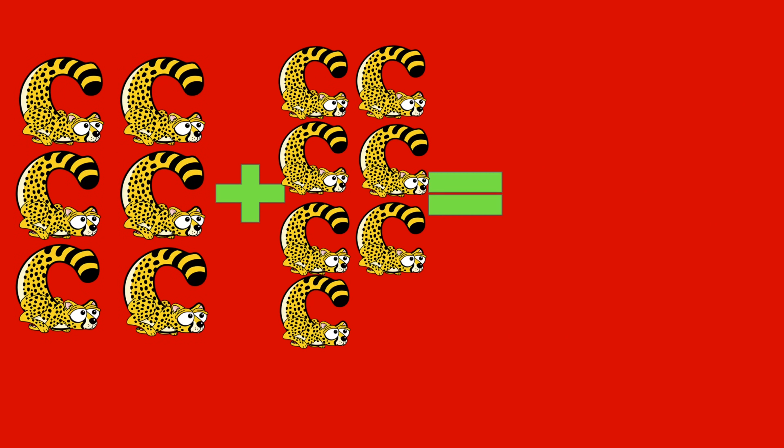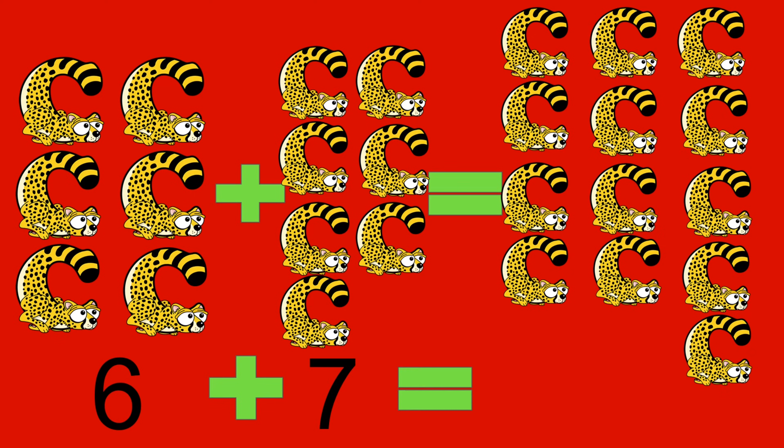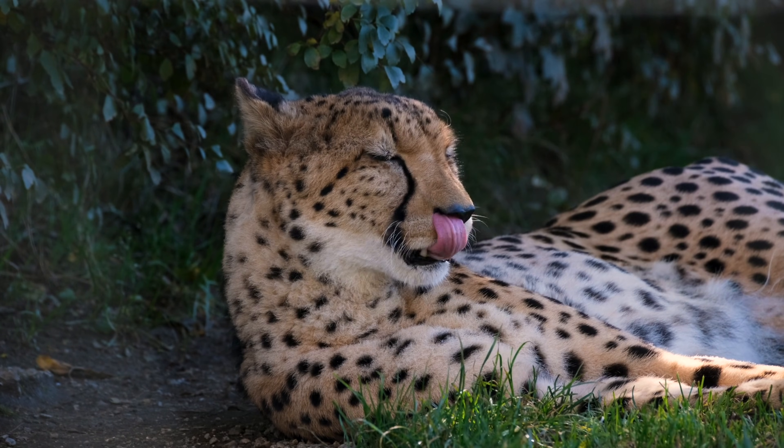6 cheetahs plus 7 cheetahs equals 13 cheetahs. 6 plus 7 equals 13. Cheetah.